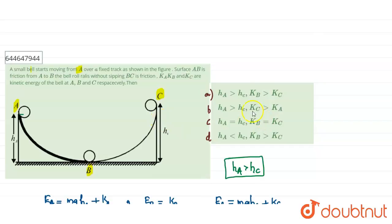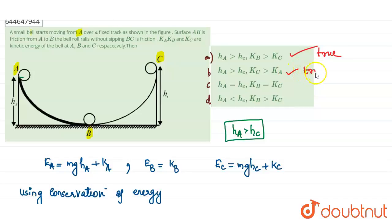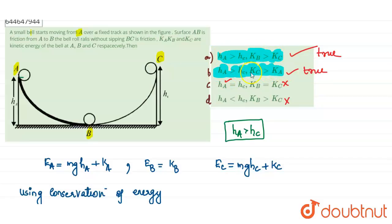Analyzing each option: Option A states h_A is greater than h_C and KB is greater than KC — this is a true statement. Option B states h_A is greater than h_C and KC is greater than KA — this is also a true statement. Option C states h_A equals h_C — this is false. Option D states KB equals KC — this is also false. So the answer matches both option A and option B.